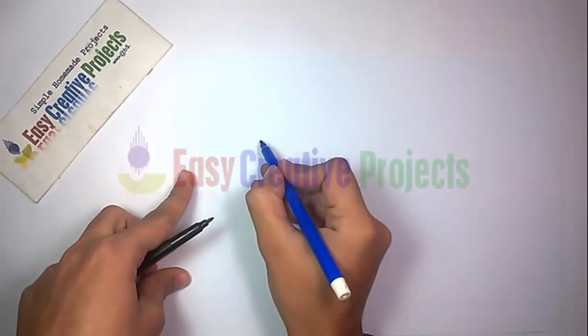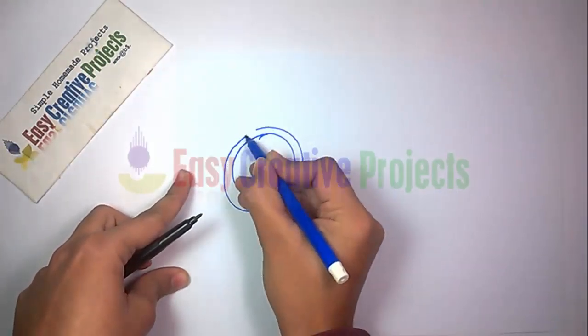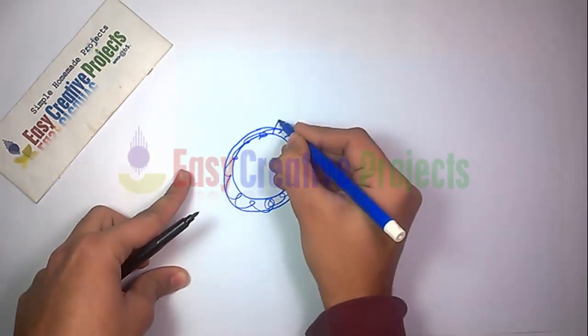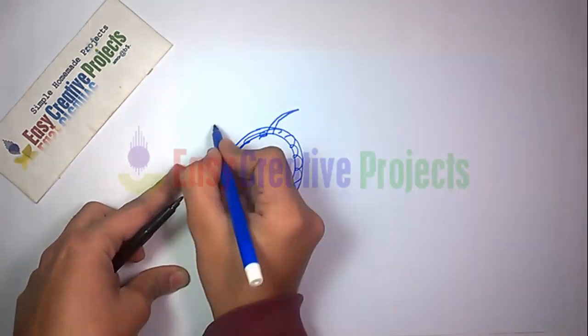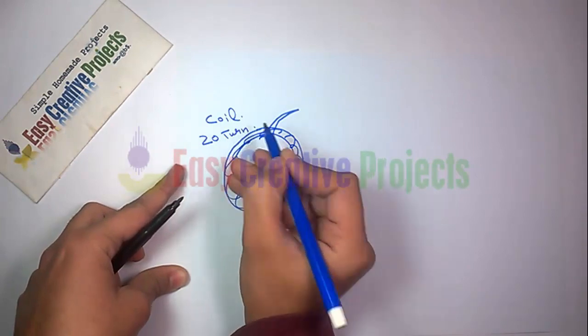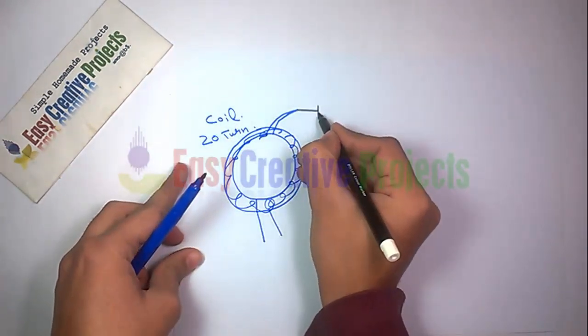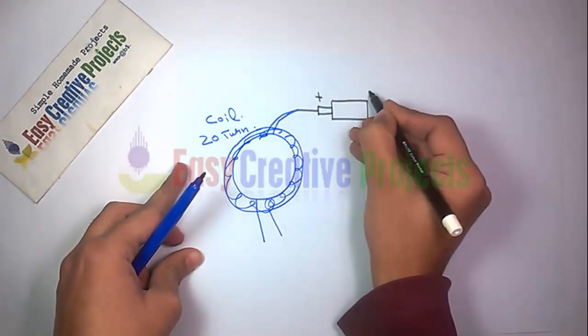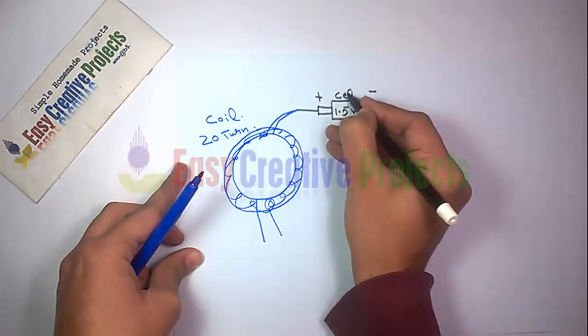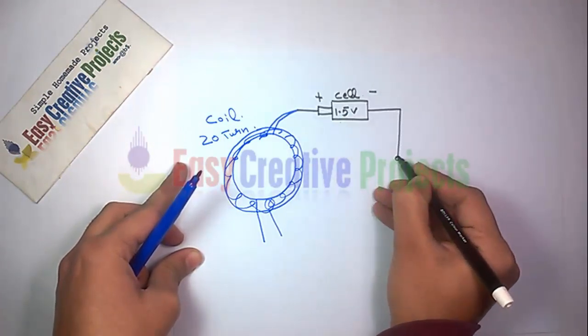The toroid has three wires. Connect the double side wire with the positive side of the cell and the negative side connects with the emitter. The second wire of the toroid connects with the base.